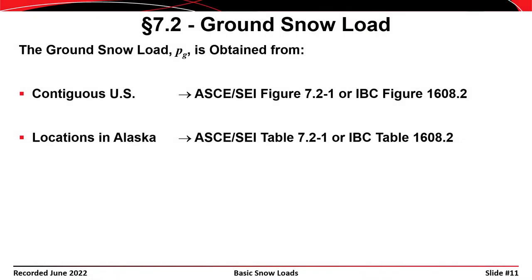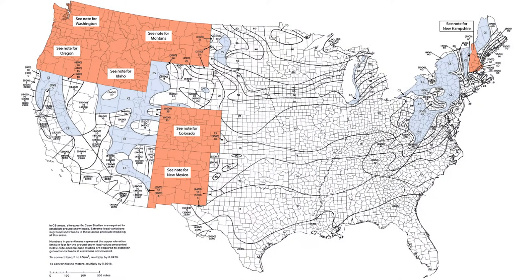The starting point for determining ground snow loads is a map in section 7.2 of ASCE 7. The same map exists in the International Building Code as figure 1608.2, but we'll refer to ASCE 7 almost exclusively. For the contiguous United States, you refer to that map; there is also a table for locations in Alaska. This slide shows the ASCE 7 map used to determine ground snow loads for the contiguous United States.